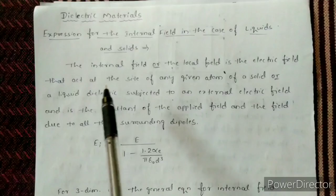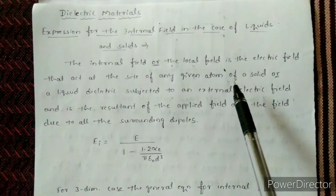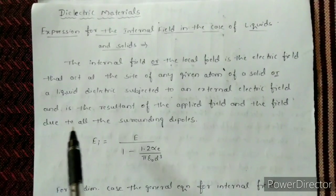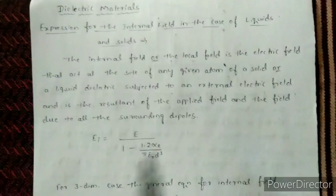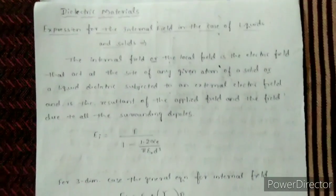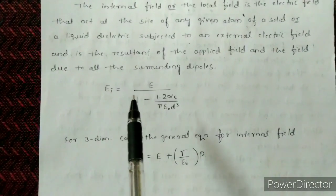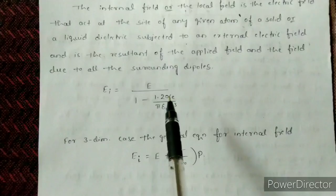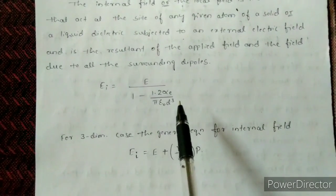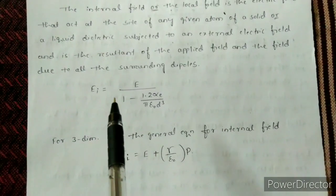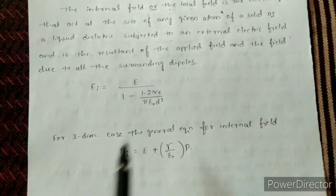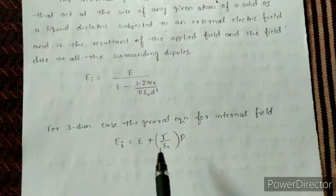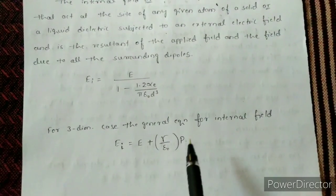So it is the electric field acting at any given site of an atom in a solid or liquid subjected to the external electric field and the field generated due to the surrounding dipoles — that is, the other dipole moments. The 1D expression is: EI equals E divided by (1 minus 1.2·αE / (π·ε₀·d³)). For the three-dimensional case, the general equation for internal field is: EI = E + (γ / ε₀) · P.